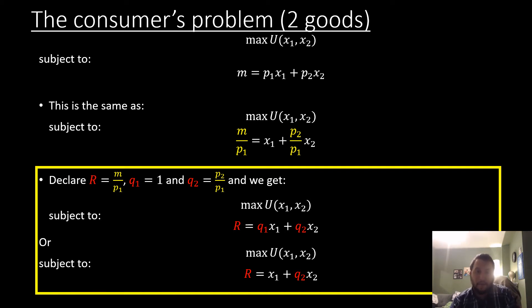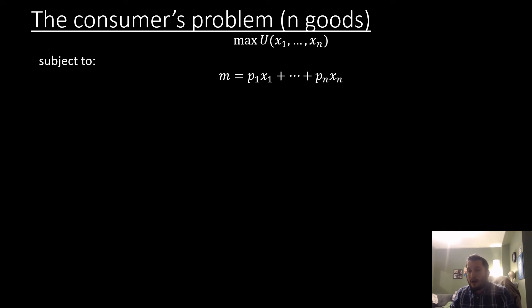Now we're going to discuss this other type of normalization where we're going to be thinking about all the prices summing to one. To do that, I'm going to be thinking about the consumer problem but this time where there's n many goods.